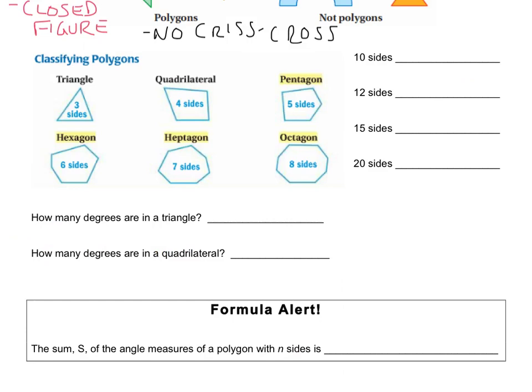We also want to remember how we classify these polygons. We said that we do it by the sides, and there are a few of them that we should certainly know. The triangle, which means three-sided. The quadrilateral, which means four-sided. Penta, pentagon is a five-sided shape. Hexa means six. Hepta means seven. Octa means eight. So the octagon has an eight-sided polygon.